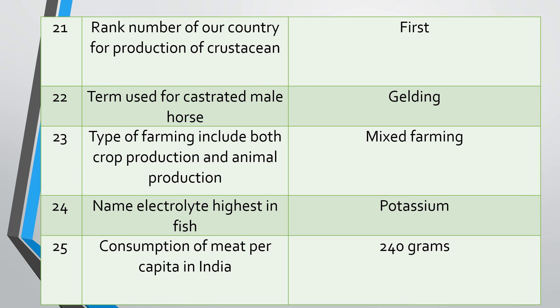Question twenty-four: Name the electrolyte highest in fish. Electrolytes are mainly sodium, potassium, chloride, and others. Answer: Potassium is the highest electrolyte in fish. Question twenty-five: What is the per capita consumption of meat in India? Answer: Per capita consumption of meat in India is 240 grams.